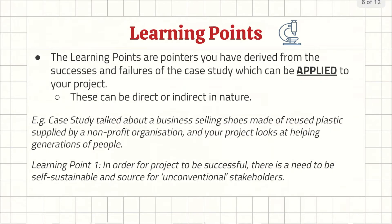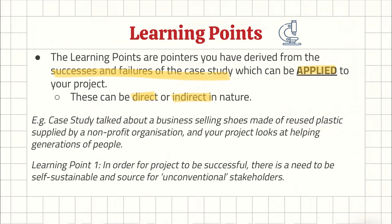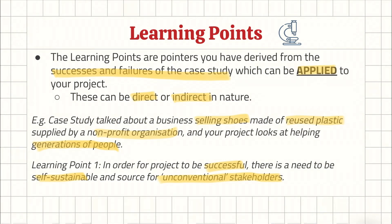Learning points are pointers you've derived from the successes and failures of a case study that can be applied to your project. These can be direct or indirect. A direct example: if they failed to have enough advertisements, your learning point would be to ensure proper advertising. An indirect example: a case study about a business selling shoes made of reused plastic supplied by an NGO, and your project looks at helping generations of people fulfill a certain need — your learning point could be that the project needs to be self-sustainable and source unconventional stakeholders.